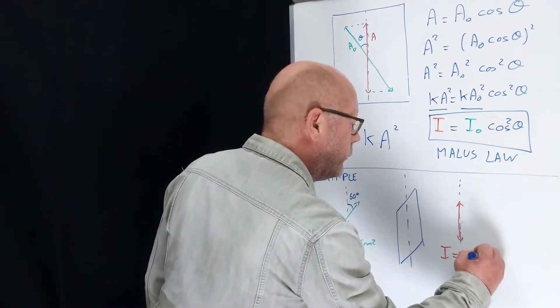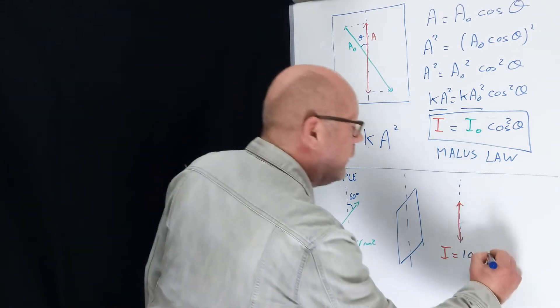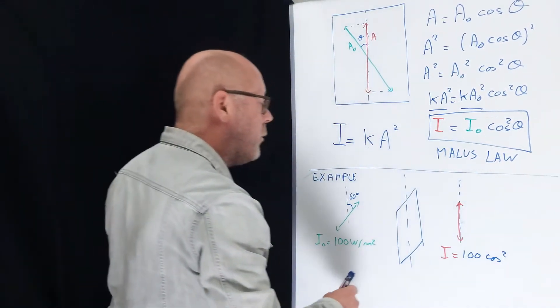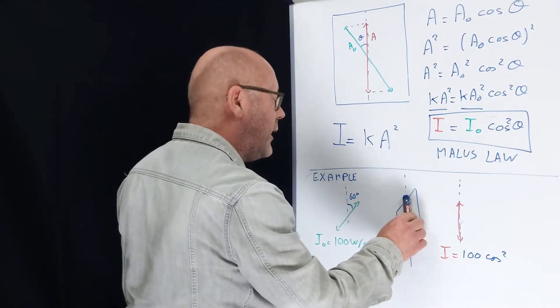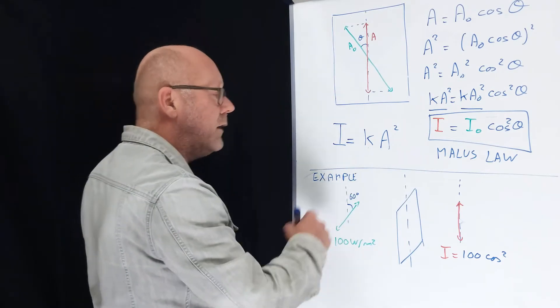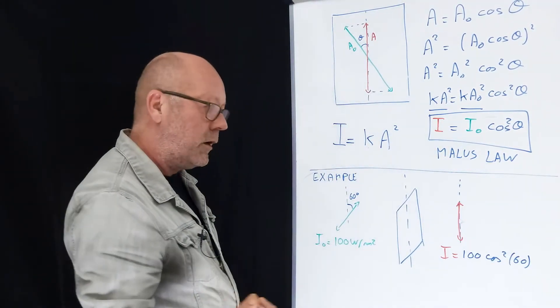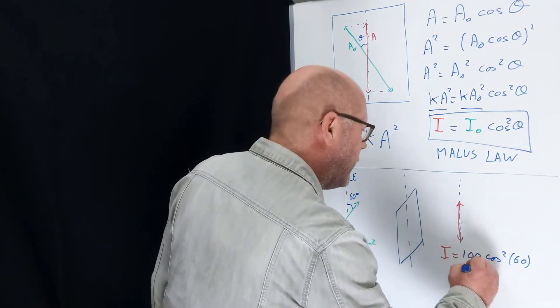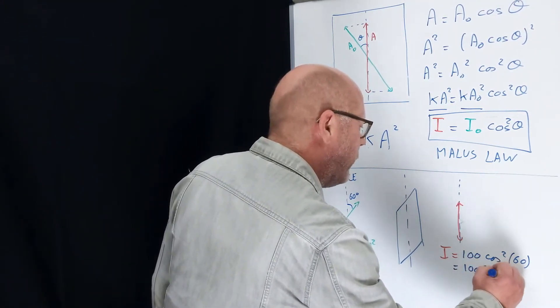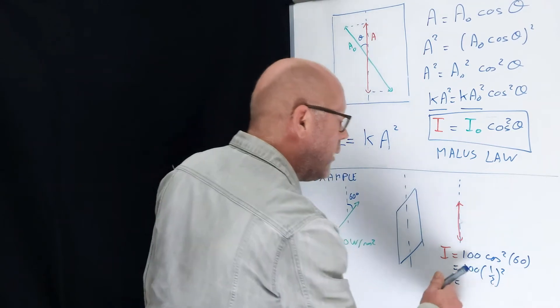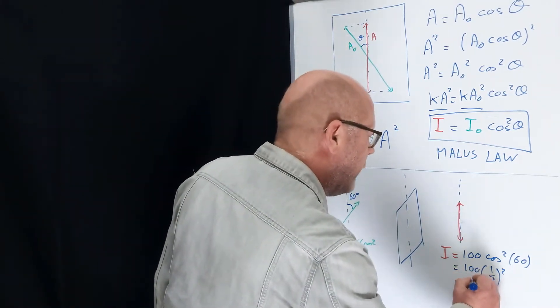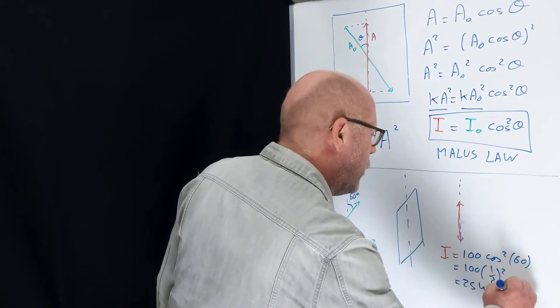Straight application. I0 is 100, cos squared of the angle between the axis of polarization and the plane of polarization of the incident light, so 60 degrees. Cos of 60 is one half, so that's 100 by one half squared. So 100 by a quarter, so 25 watts per meter squared.